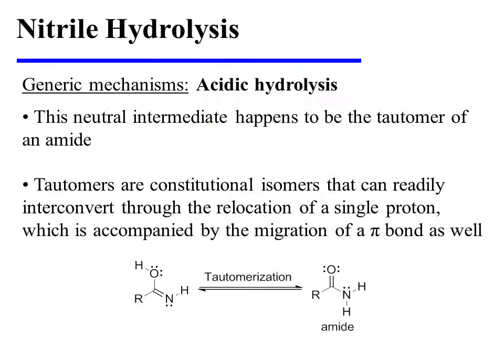The oxonium ion that is thus formed then sheds a proton so as to yield a neutral intermediate. This neutral intermediate happens to be the tautomer of an amide. Tautomers are constitutional isomers that can readily interconvert through the relocation of a single proton, which is accompanied by the migration of a pi-bond as well.